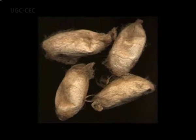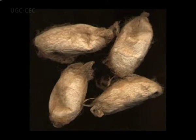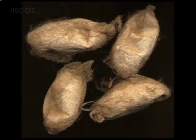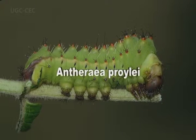Antheraea mylitta is a tri-voltine tusser silkworm, reared during July–August (rainy cocoon crops), September–October (autumn cocoon crops), and November–December (winter cocoon crop season). The cocoon's shape, size, and colour vary from one to another depending on race and feeding habit.